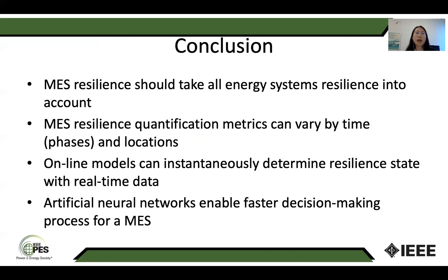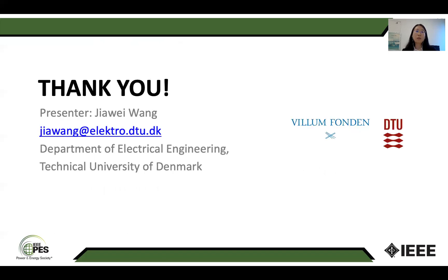In conclusion, the multi-energy system resilience should take all energy systems' resilience into account. The quantification matrix can vary by time and by location. Online models can instantaneously determine the resilient state with real-time data. We can also use artificial neural networks to enable faster decision-making for multi-energy system resilience. That's all about my data-driven approaches applied to the multi-energy system resilience topic. Thanks for watching, and please contact me through my email address. Thank you very much.